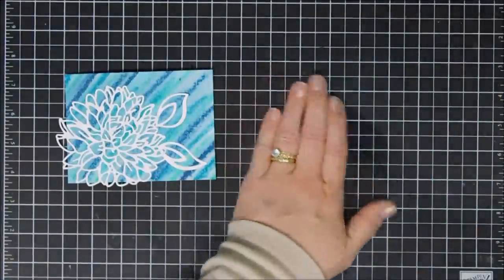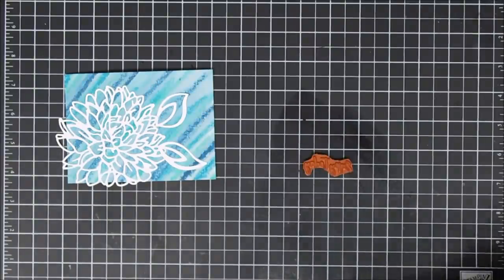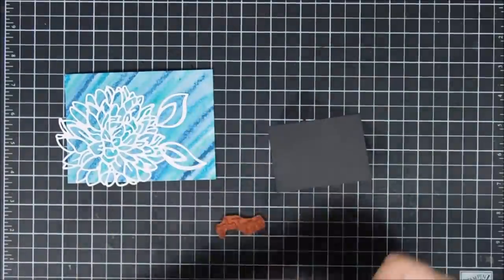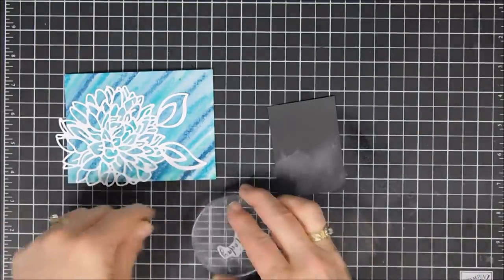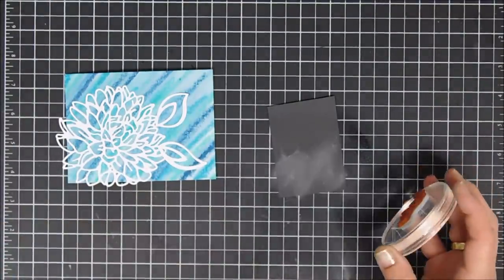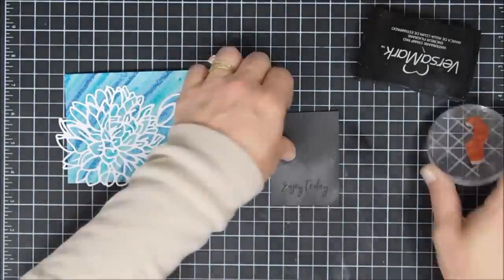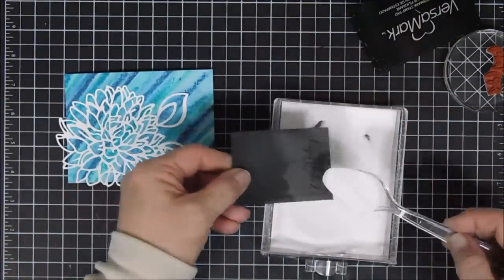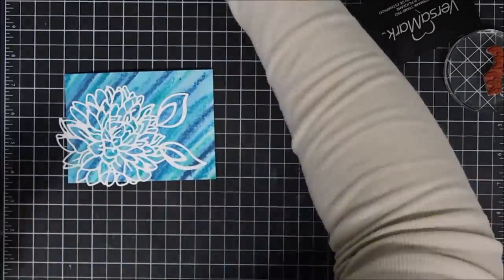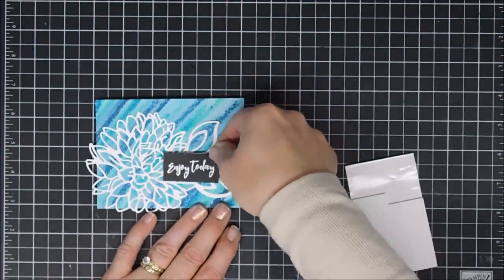For my sentiment today I'm using a Fun Stampers Journey stamp set. It's called Fresh Start. It was from the Stamp of the Month club and I'll link that down below. Super pretty sentiments. This one says Enjoy Today, so I'm stamping it on black cardstock with my VersaMark ink and we're going to do heat embossing with some white embossing powder. With my heat gun I melted it and then I did use my paper trimmer to block it off. Now all we have to do is add some foam tape behind our sentiment and place that on our panel.